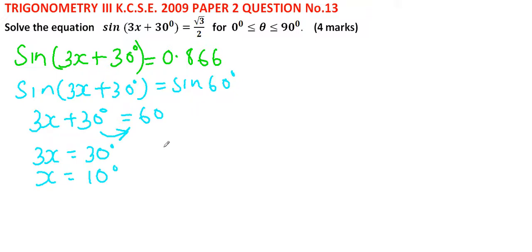Again, from the unit circle, an angle whose sine is 0.866 is 120°. So this means sin(3x + 30°) = sin(120°), therefore 3x + 30° = 120°.